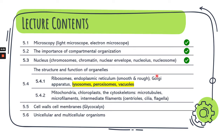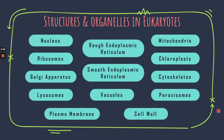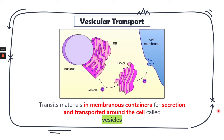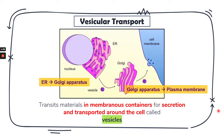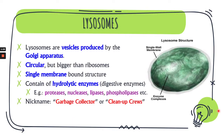Without further ado, let's begin. Let's begin with the first organelle, which is the lysosome. It is known as the digestive compartment. Lysosomes are vesicles that are produced by the Golgi apparatus.